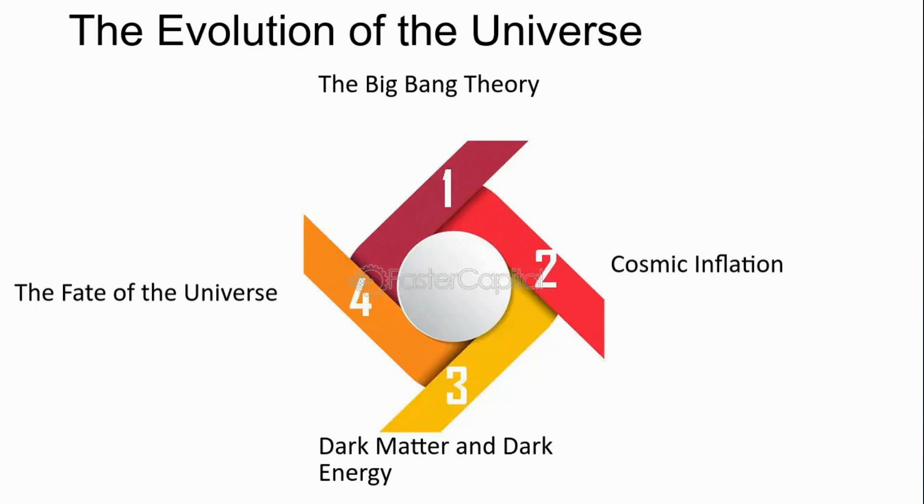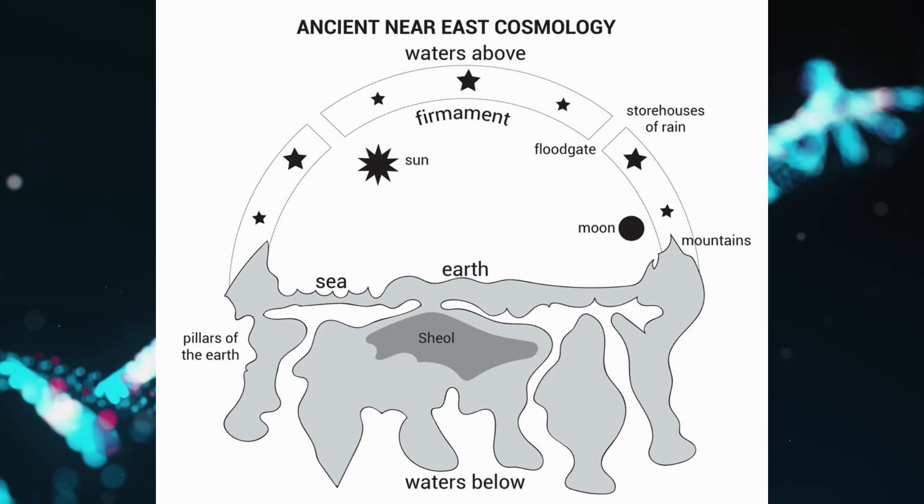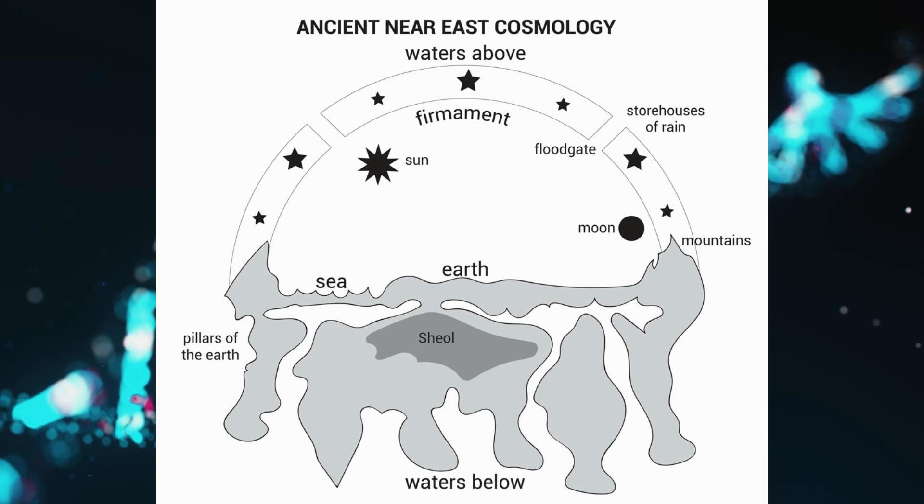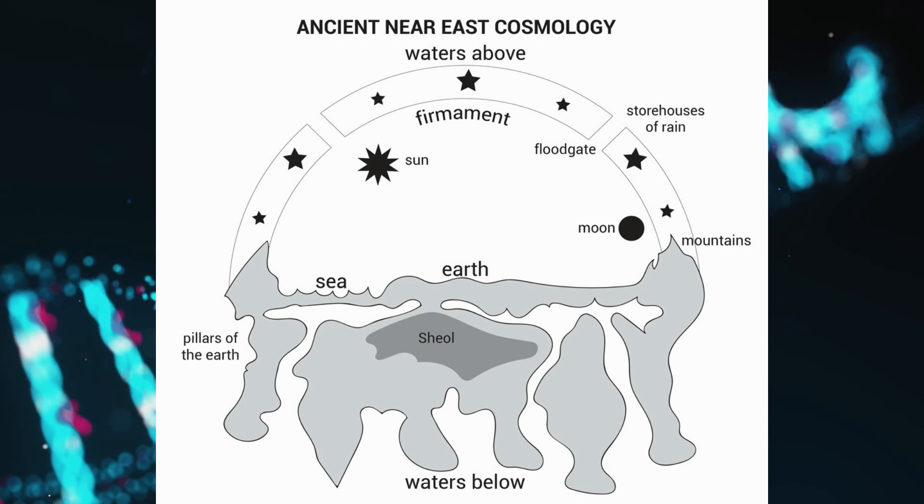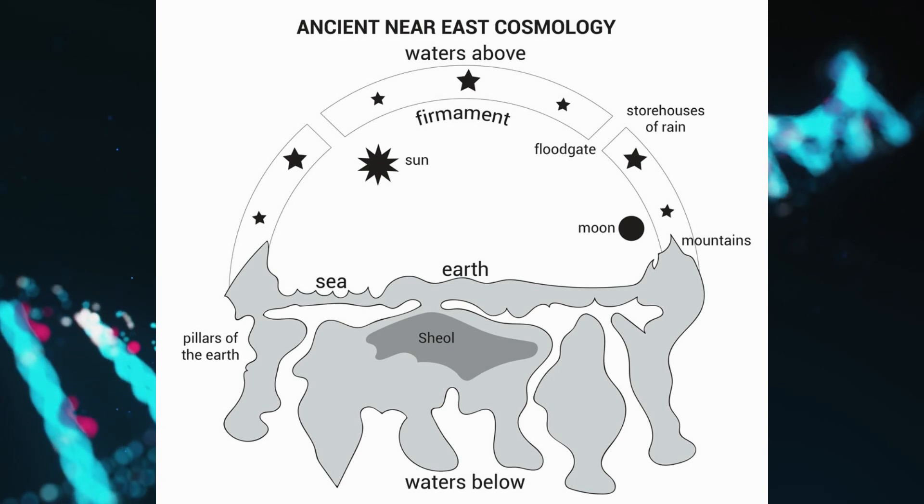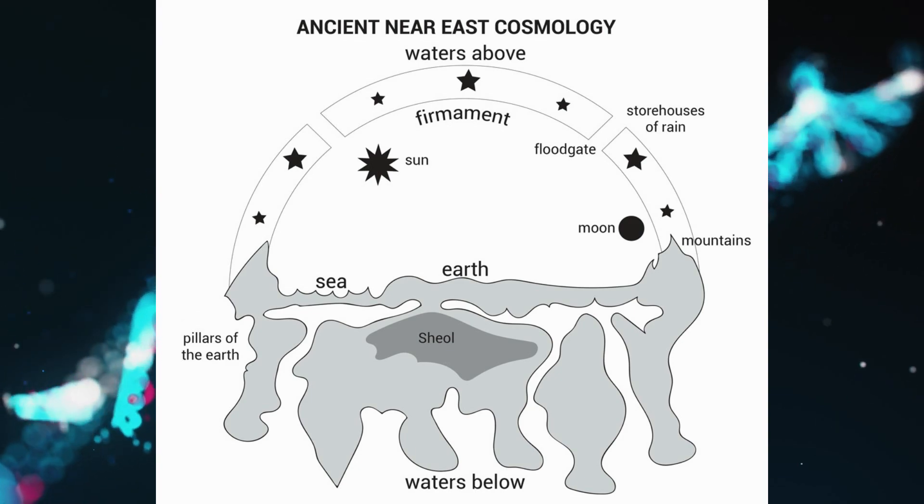The journey of cosmology as a science is as fascinating as the cosmos itself. Initially rooted in the realms of philosophy and mythology, cosmology has evolved dramatically with the advancement of technology and observational methods. Here's a brief chronology highlighting this transformation. Ancient cosmology, based largely on myth and speculation, the earliest cosmologies were formed by civilizations such as the Babylonians and Greeks, who offered sophisticated yet untested narratives of the universe's structure.